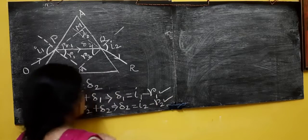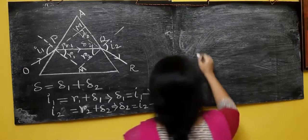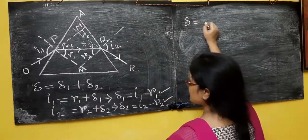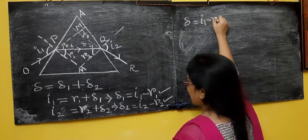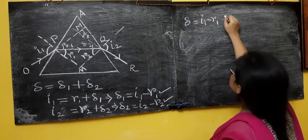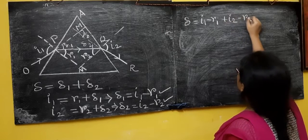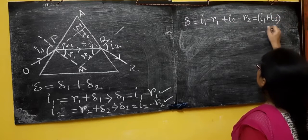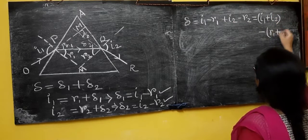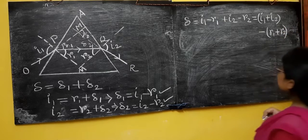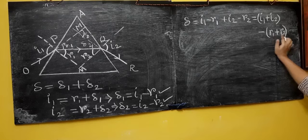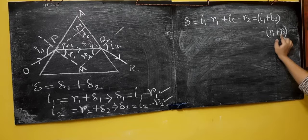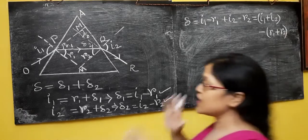Substituting into the equation: delta equals delta1 plus delta2 equals (I1 minus R1) plus (I2 minus R2), which gives delta equals I1 plus I2 minus (R1 plus R2). Now, I cannot measure the inside angles R1 plus R2 because they are inside the prism — it is not possible to measure them directly. So I need to eliminate R1 plus R2. To do that, I will come back to the diagram.